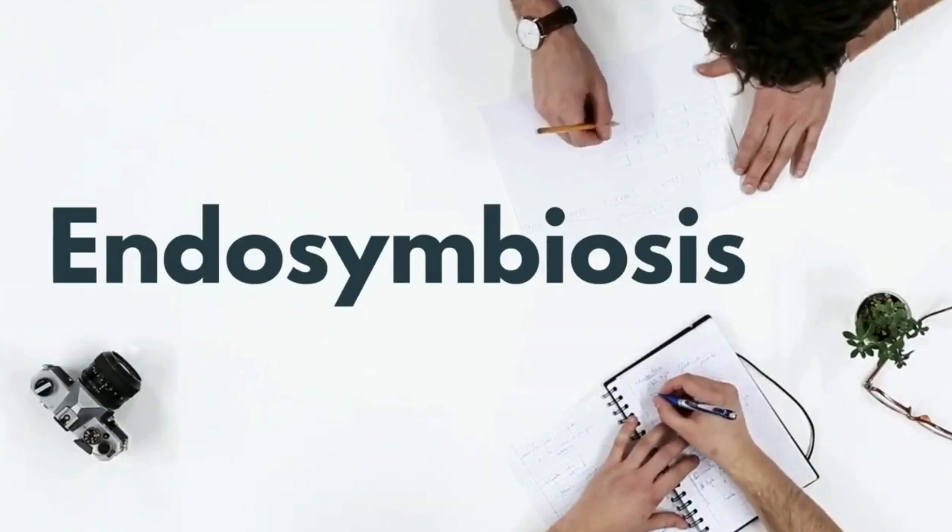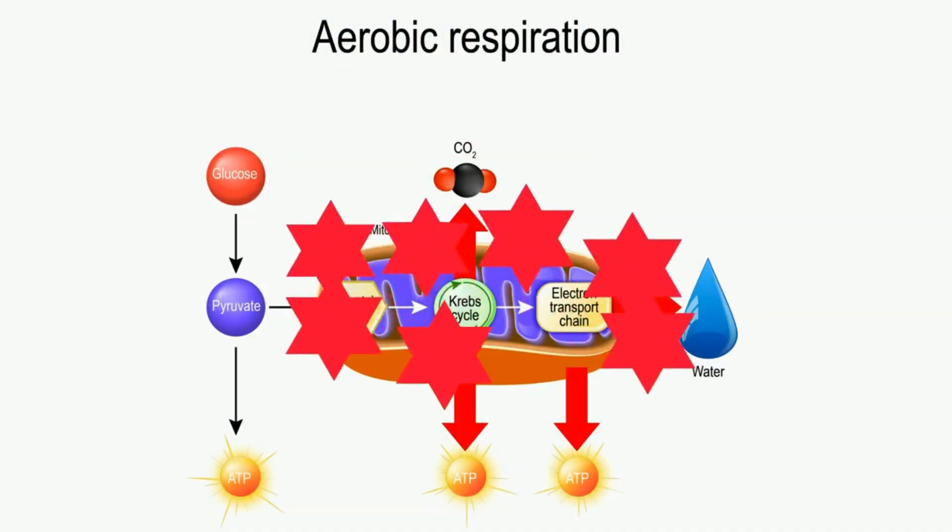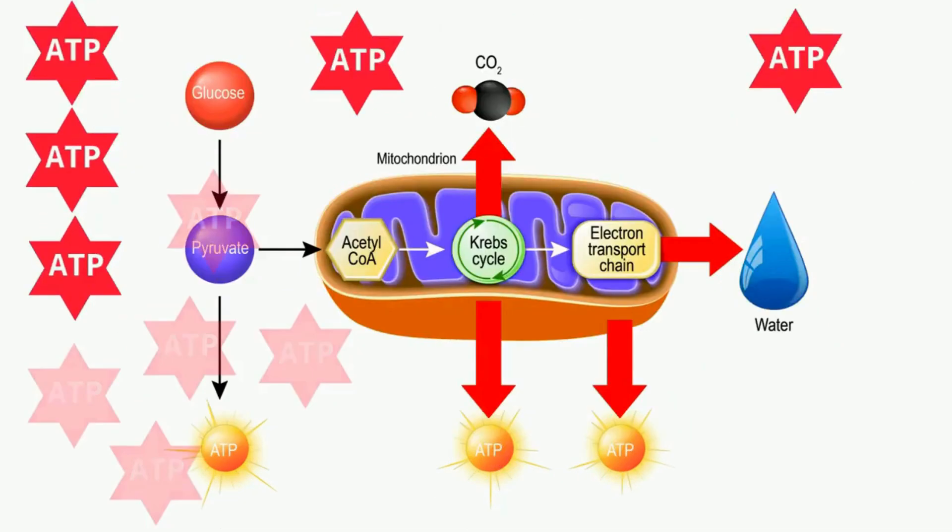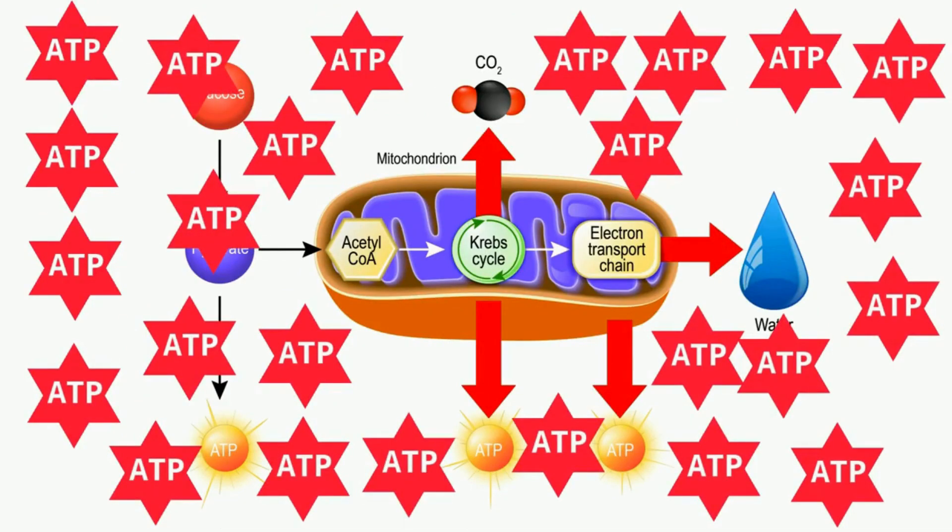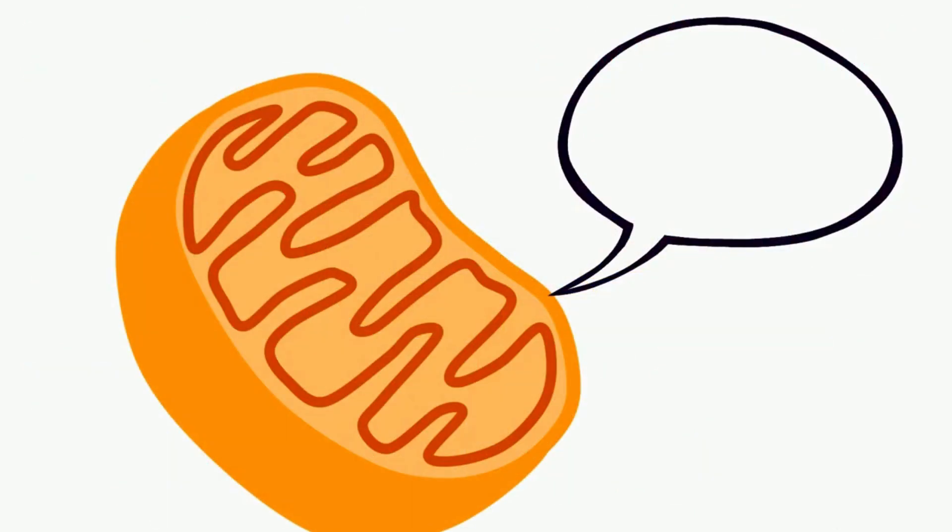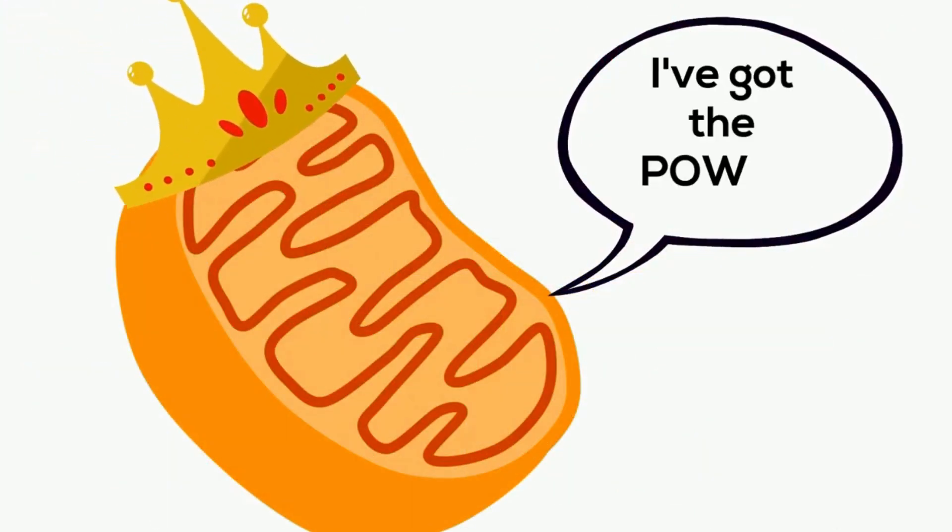During cellular respiration, with the help of oxygen, the mitochondria produces 25 ATP. Compare this to only 3 ATP produced by glycolysis in the cytoplasm. Thus the title, the powerhouse of the cell. But why is this a big deal?